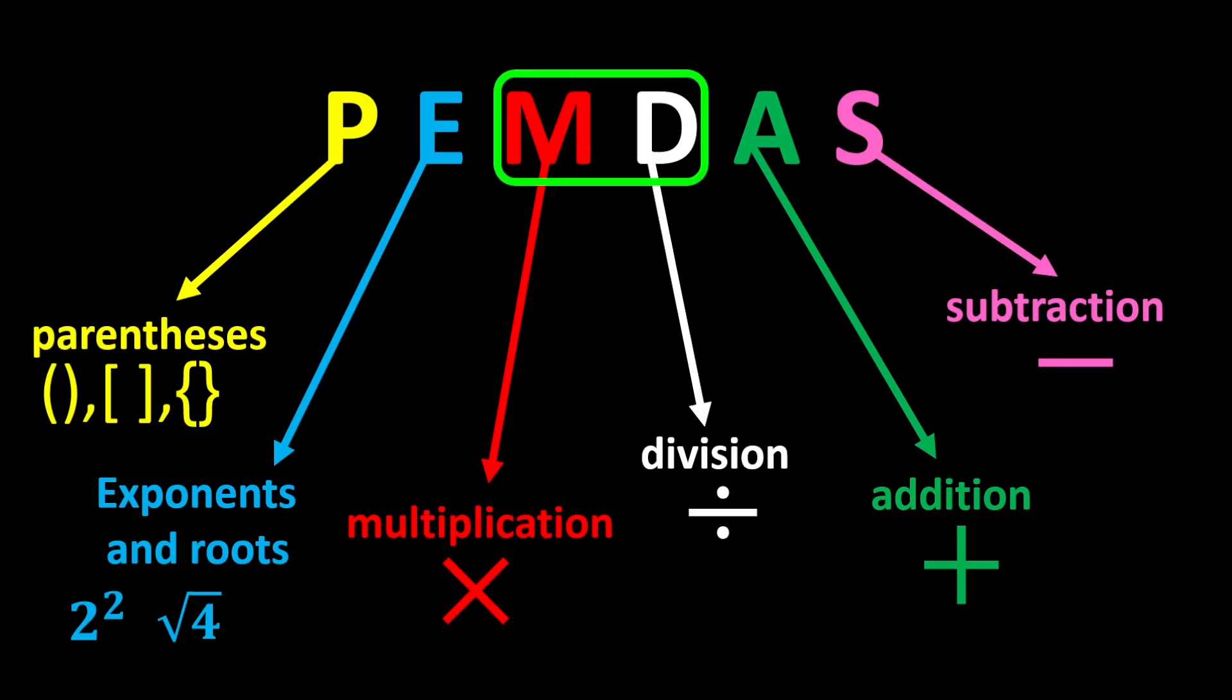Remember that multiplication and division have equal priority. In any expression that has both multiplication and division, we move from left to right and perform whichever we reach first. This rule also applies to addition and subtraction.